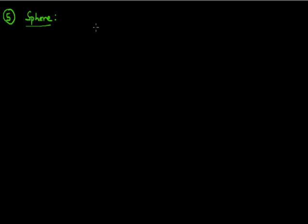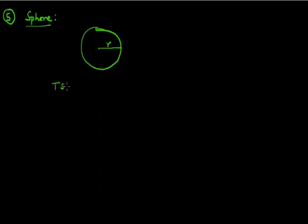Most importantly, we need to find out the curved surface area and the volume of spherical bodies. To find the curved surface area: since it is a sphere with a circular part, it definitely has some radius. In this case, the total surface area is the same as the curved surface area.